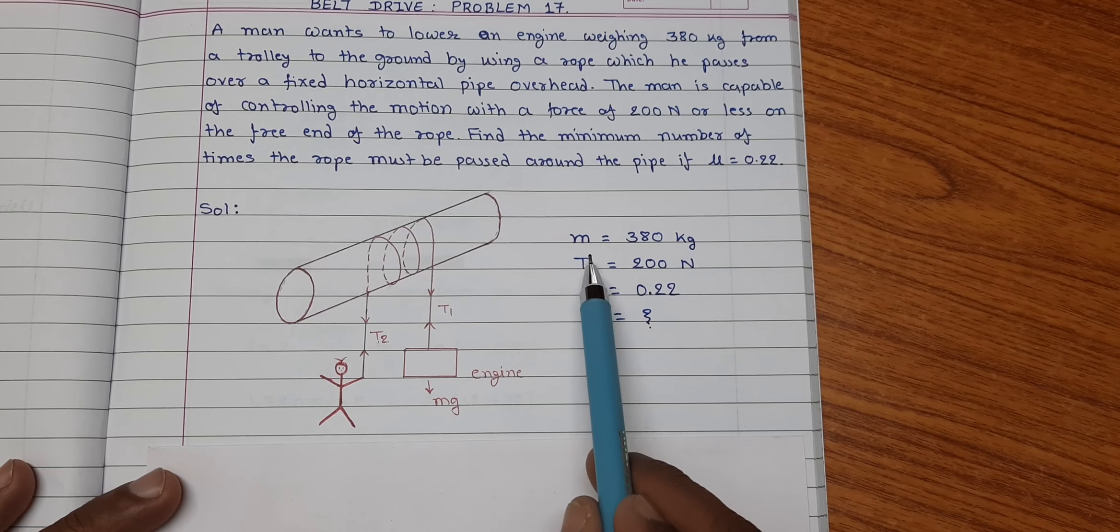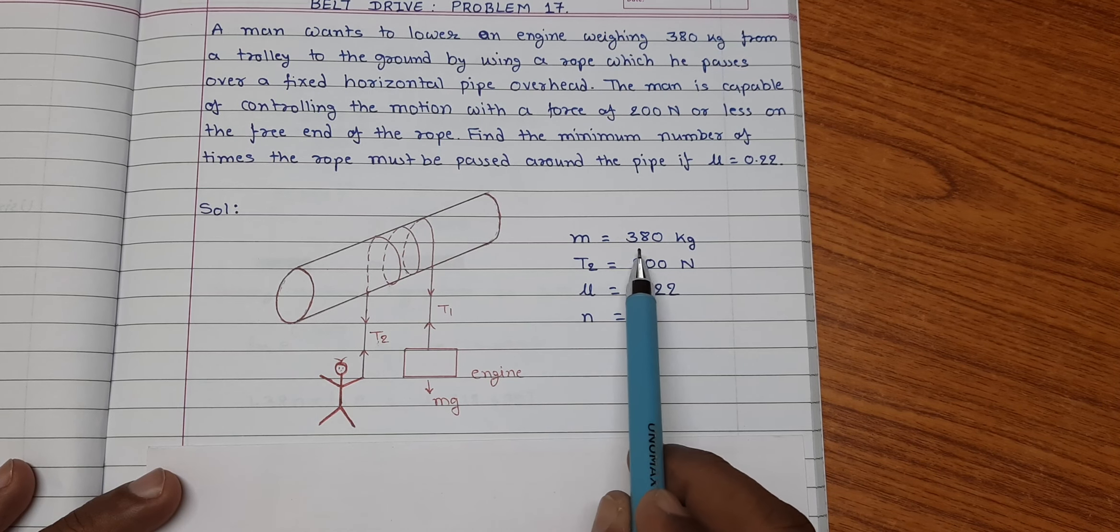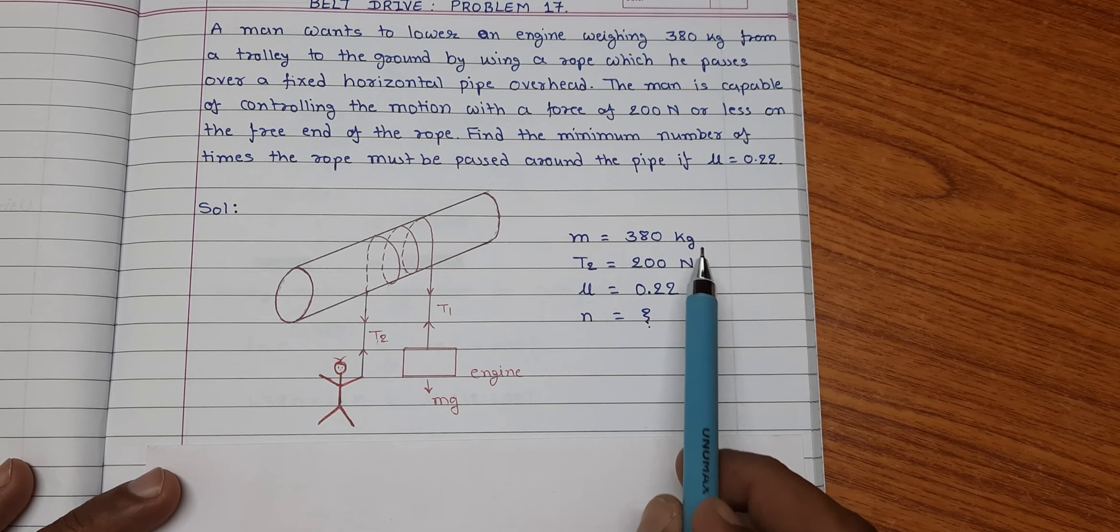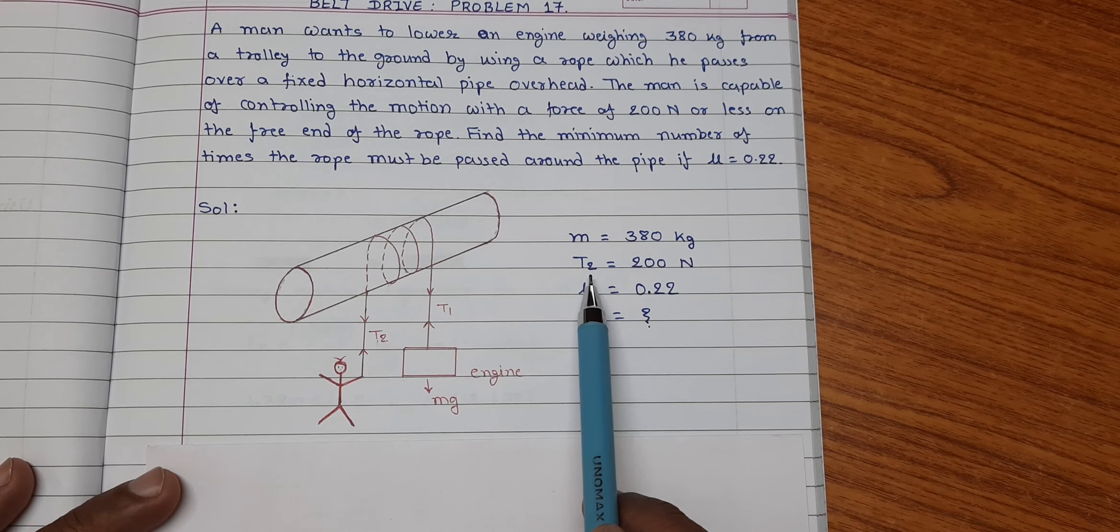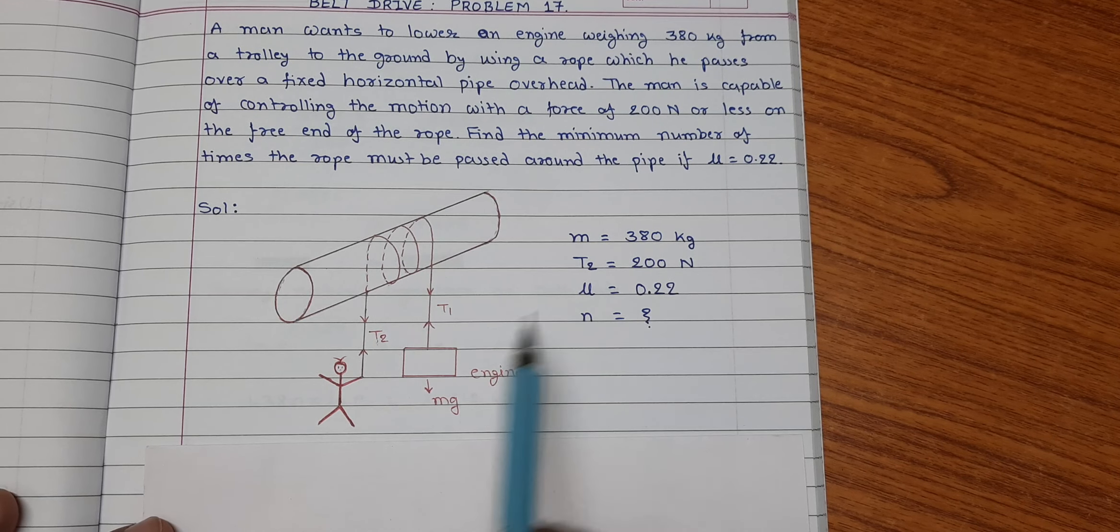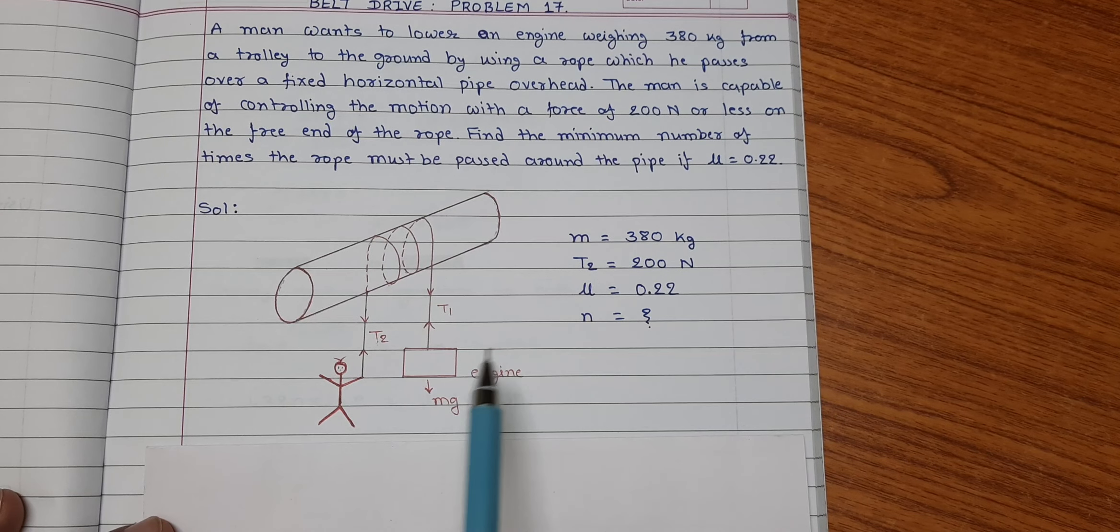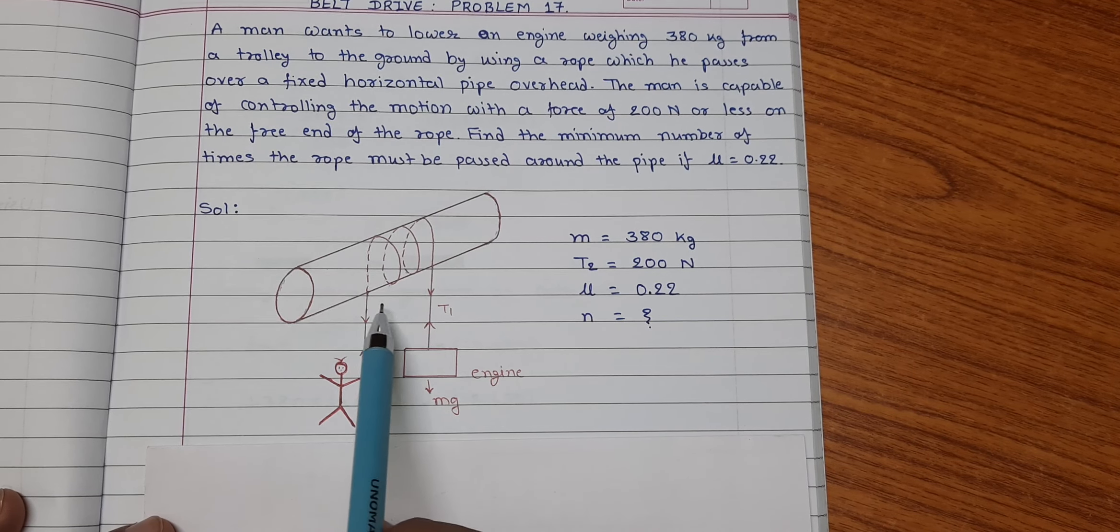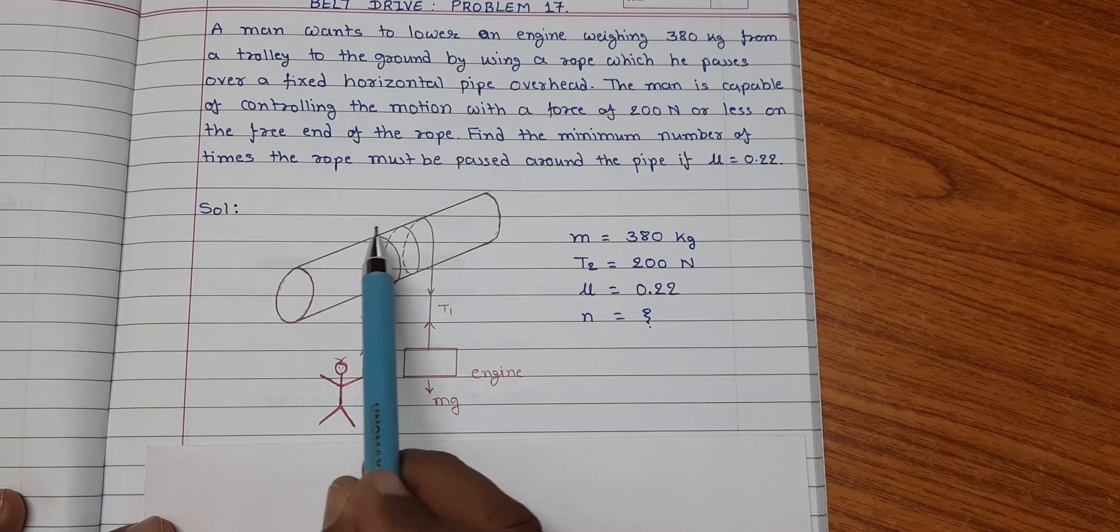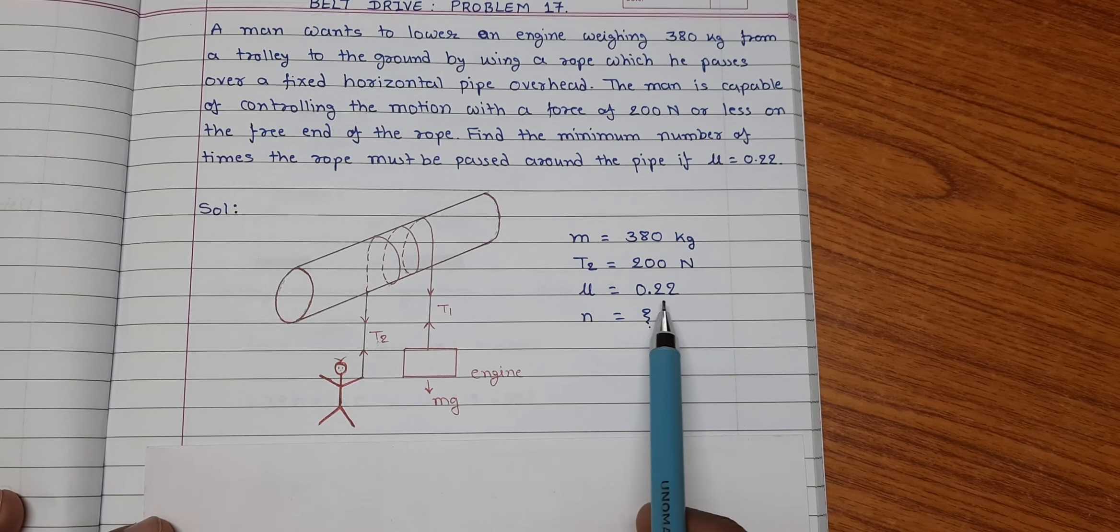Here, it is given that mass of the engine is 380 kg. The force applied by the man is given 200 N. So, we can say T2 is equal to 200 N. The coefficient of friction between the rope and the surface of the pipe is given 0.22.